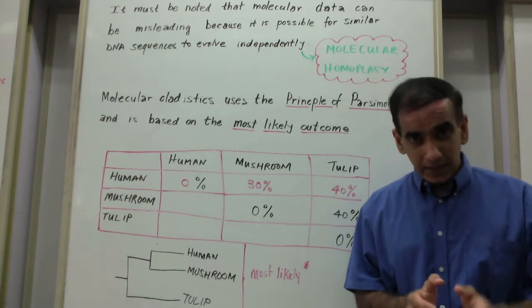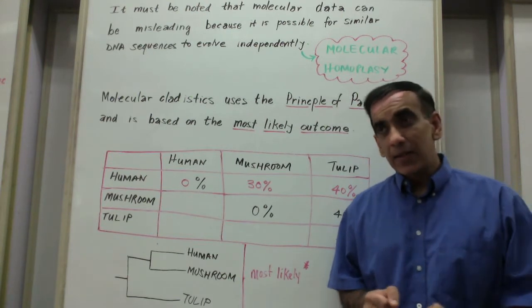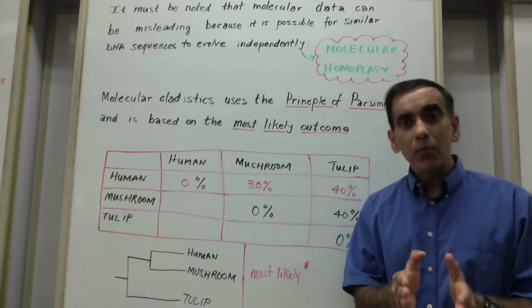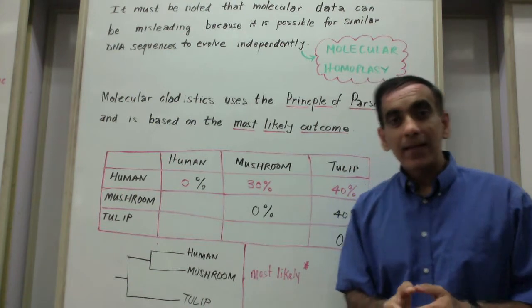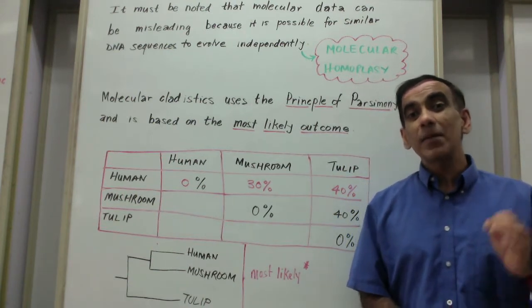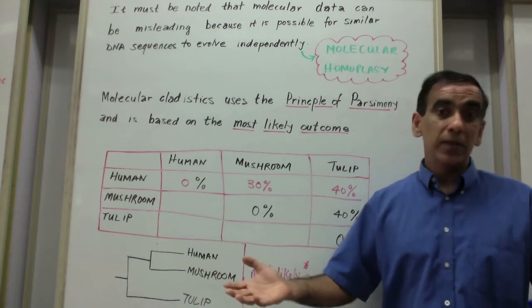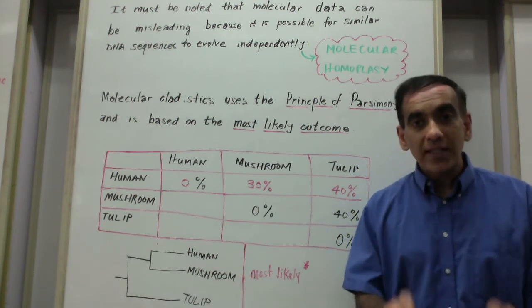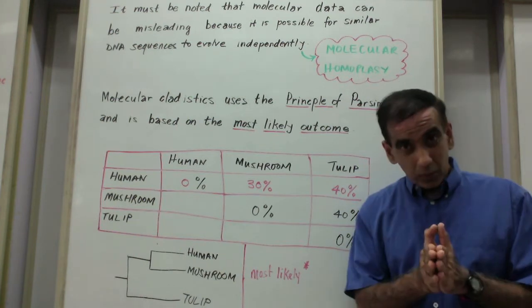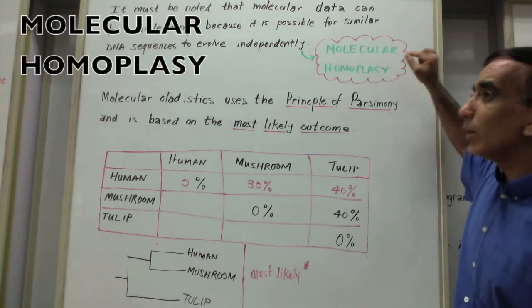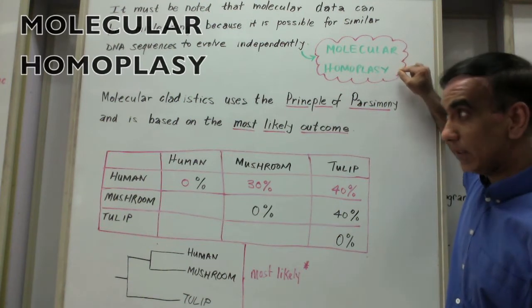While modern-day cladistics depends heavily on molecular data, it's important to recognize that this molecular data is not foolproof and it does not come without its limitations. The possibility does exist for organisms to have similar DNA sequences and amino acid sequences and despite having these not have a common ancestor. When such a case is identified, it's described as a molecular homoplasy.